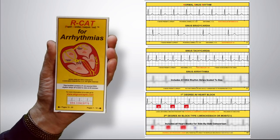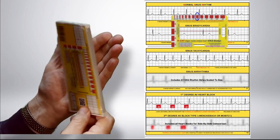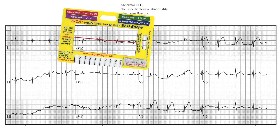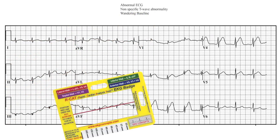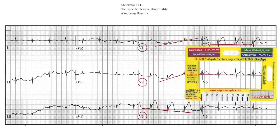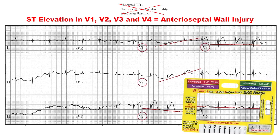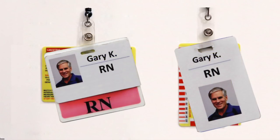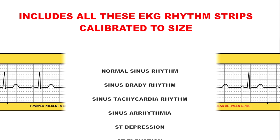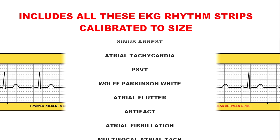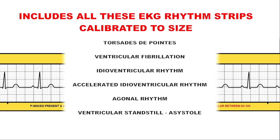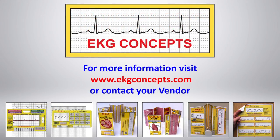The RCAD for Arrhythmias is sold separately or in combination with the EKG badge. The EKG badge can also be used to interpret 12-lead EKGs. The EKG badge can hang horizontally or vertically behind your name badge or fit in any size pocket. All these features of the Pocket RCAD for Arrhythmias and the EKG badge make this the ultimate reference and teaching tool for all medical personnel and students.